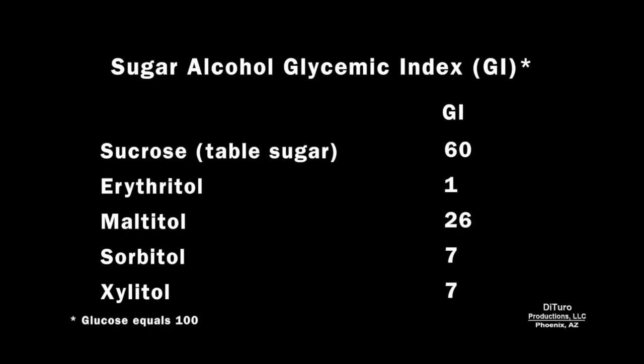Comparing the glycemic index of common sugar alcohols to table sugar shows maltitol is about 50% the GI of table sugar. The sugar alcohol with the lowest GI, providing almost zero calories, is erythritol.